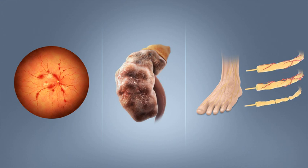Limiting sugary beverages and eating less red meat and other sources of saturated fat can also help prevent diabetes. Tobacco smoking is also associated with an increased risk of diabetes and its complications, so smoking cessation can be an important preventive measure. The relationship between type 2 diabetes and the main modifiable risk factors — excess weight, unhealthy diet, physical inactivity, and tobacco use — is similar in all regions of the world. There is growing evidence that the underlying determinants of diabetes are a reflection of the major forces driving social, economic and cultural change: globalization, urbanization, population aging, and the general health policy environment.